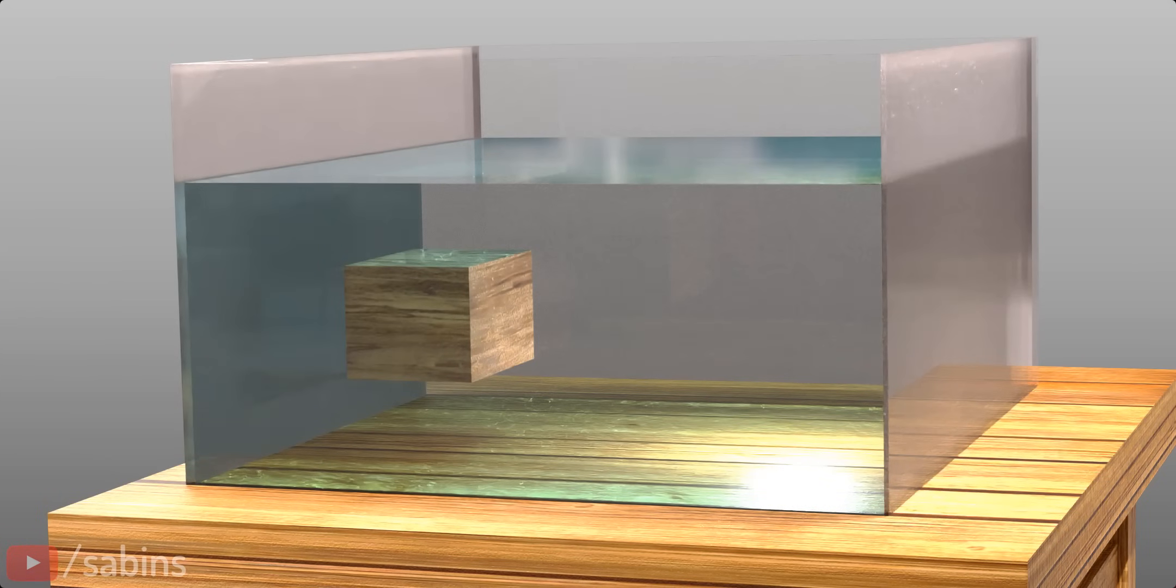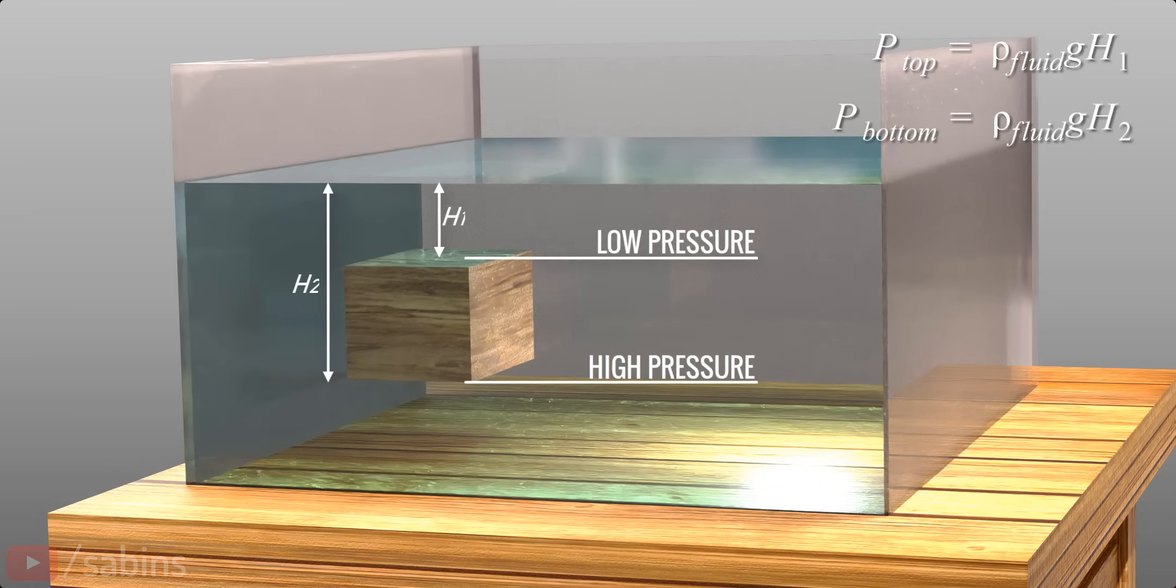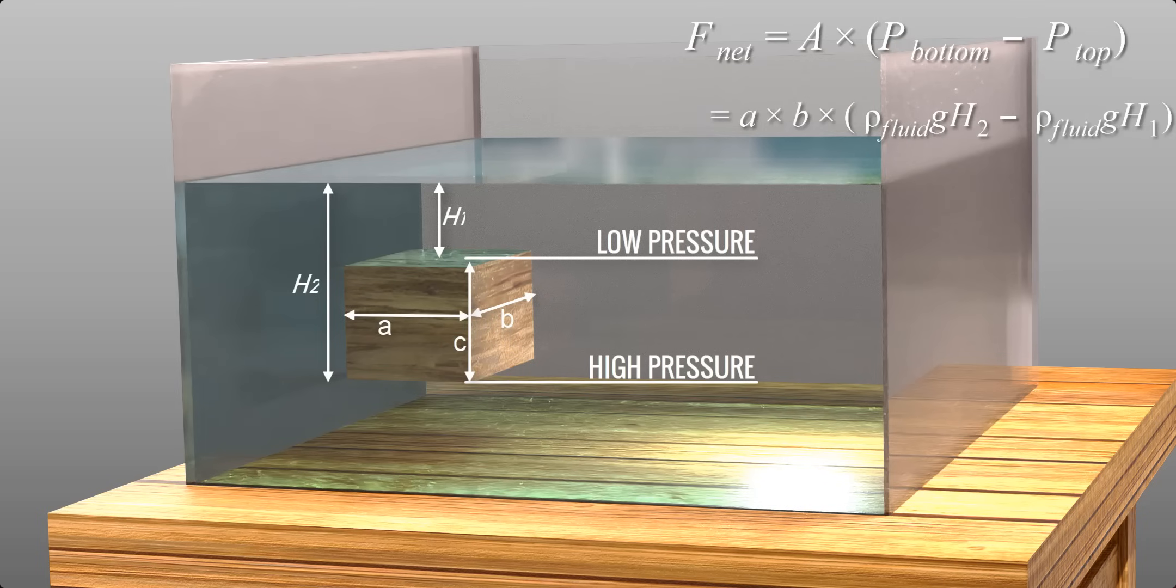The pressure is different at the top and bottom of an object due to the height difference. And this pressure difference causes buoyancy force. Let's derive the values of these pressures mathematically.